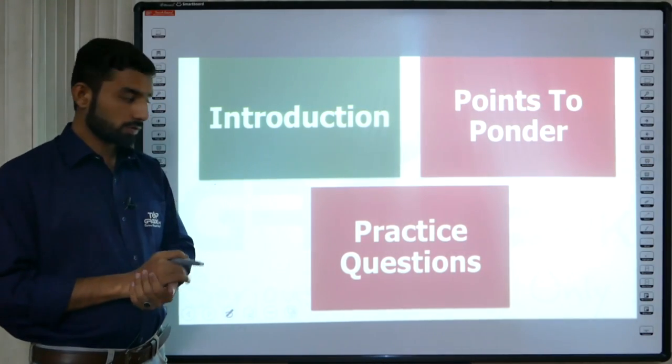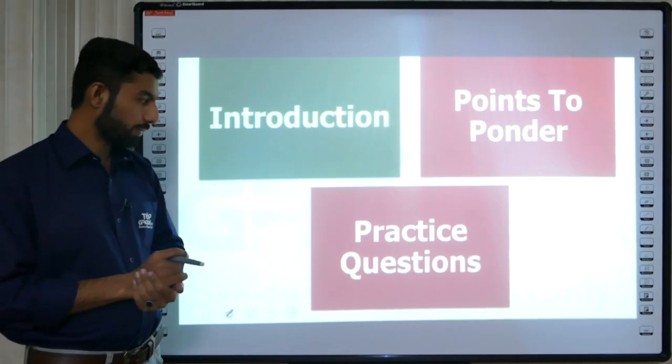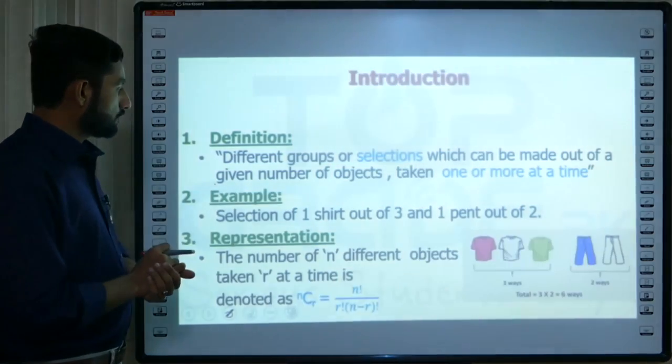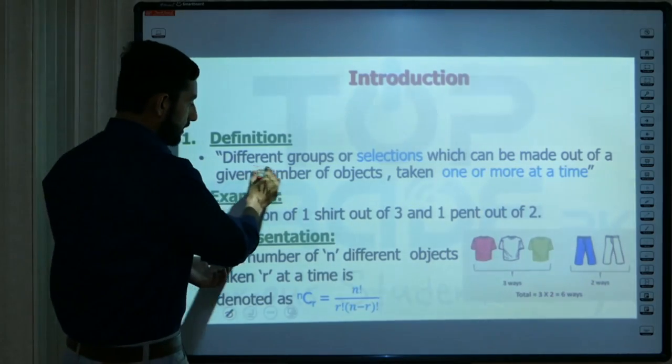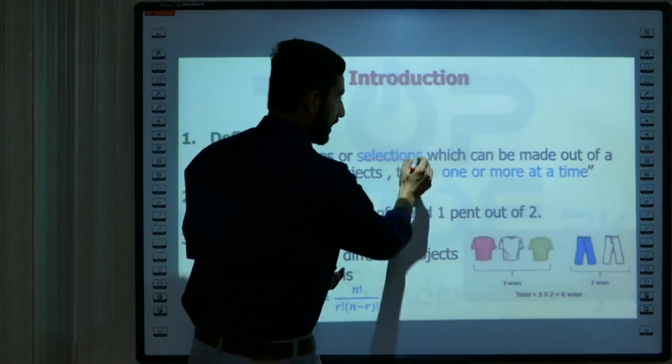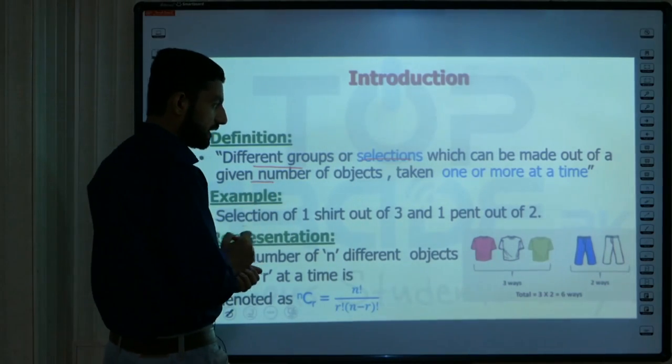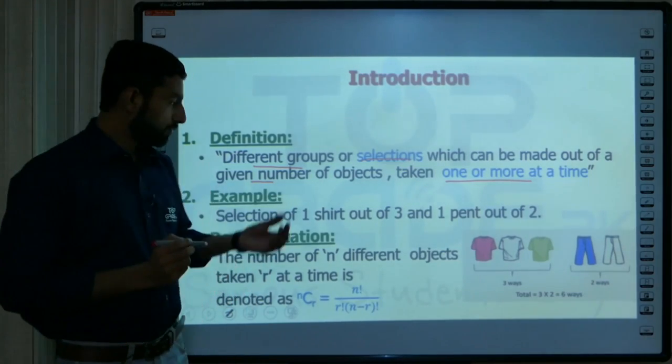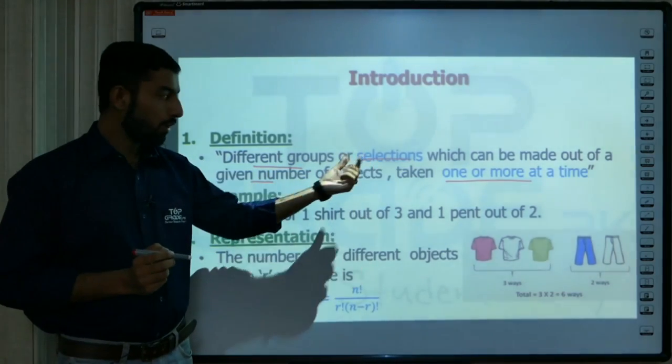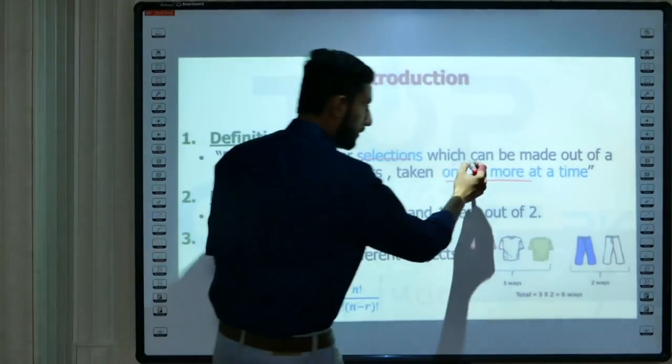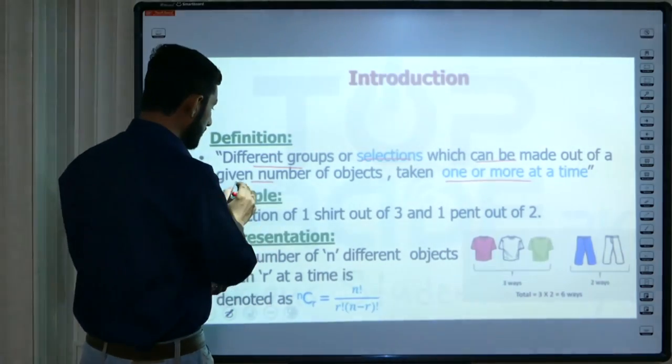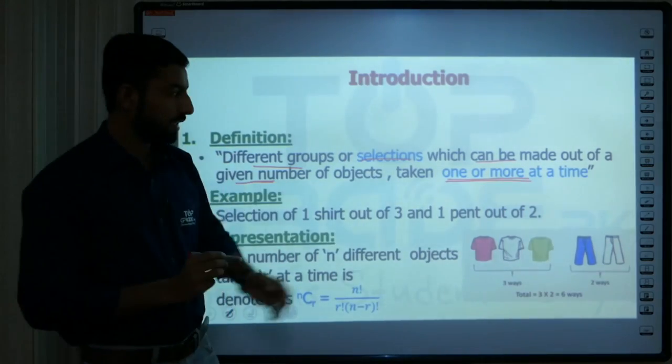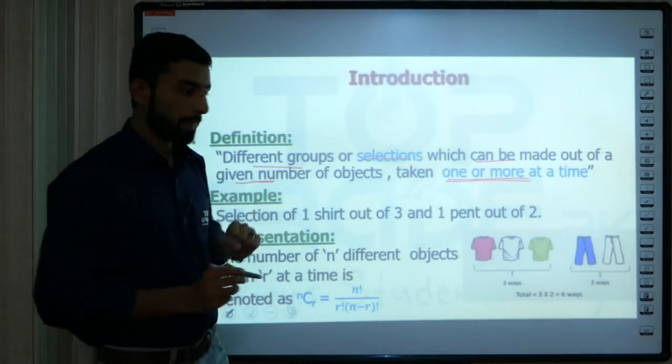The definition: different groups or selections which can be made out of a given number of objects, taken one or more at a time. The number of 'n' different objects taken at a time is denoted as 'C'.